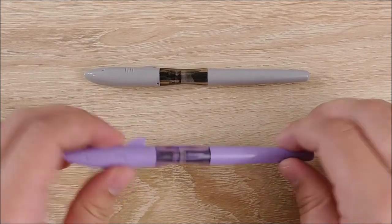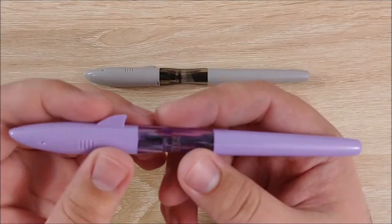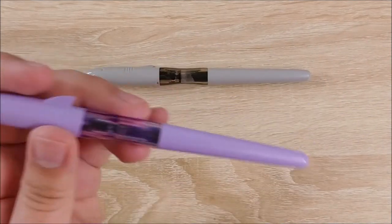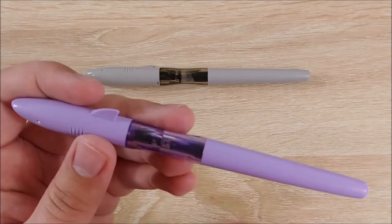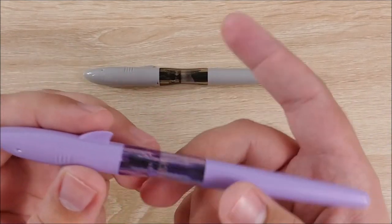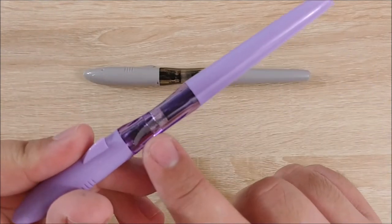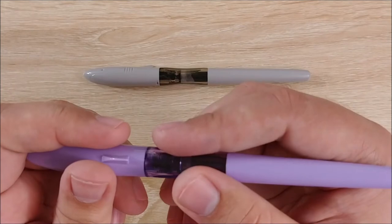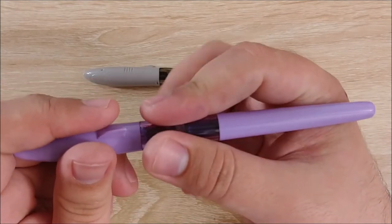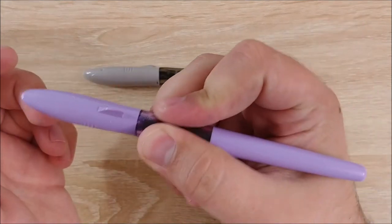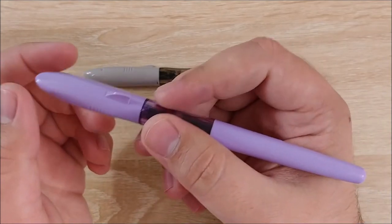All right, on to what I like about the pen. So first thing up is going to actually be the section. Some people will not like this. Some people love it. I think for a beginner writer, it's a very good section, because like the Safari and like the Pilot Penmanship, it has a slot for your pointer finger, your thumb, and your middle finger just on the bottom. So it gives you that pen grip.